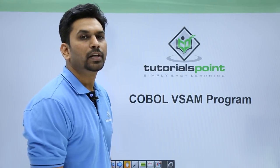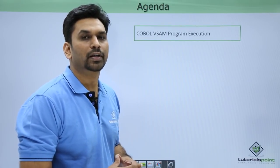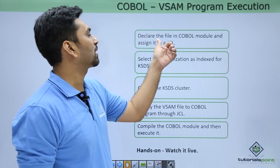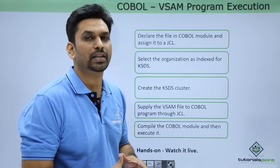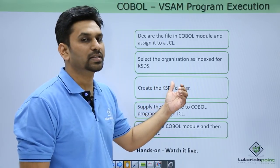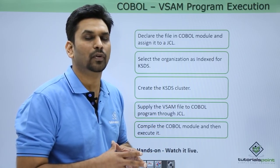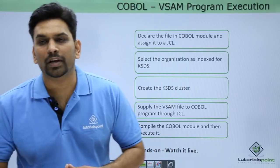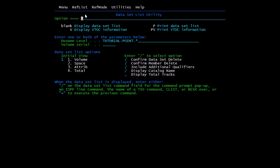Hello friends, welcome to Tutorials Point. In this video we will learn about COBOL VSAM programs. The agenda is: first we will write a COBOL module, then use a VSAM file to access records. You must declare the file in the COBOL module and assign it to a JCL, then select the organization as indexed for KSDS because we will fetch records randomly. Next, create the KSDS cluster, supply the VSAM file to the COBOL program through JCL, compile the COBOL module, and execute it.